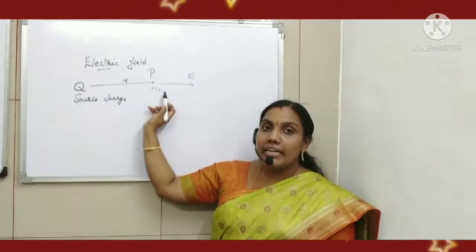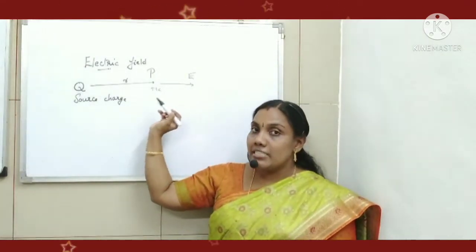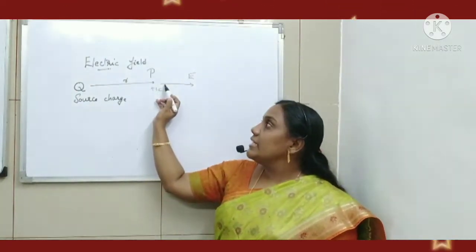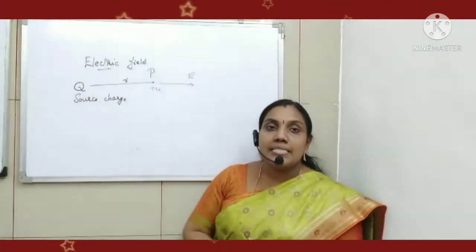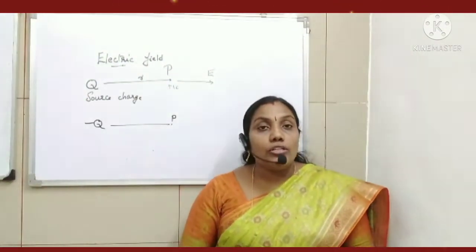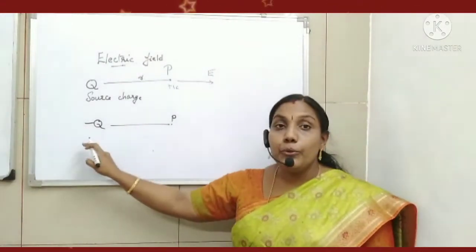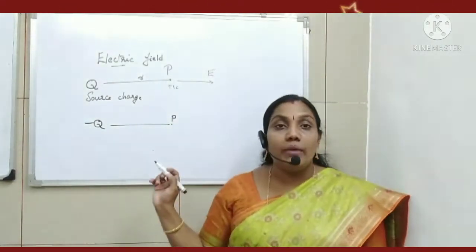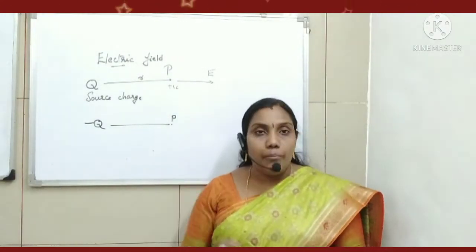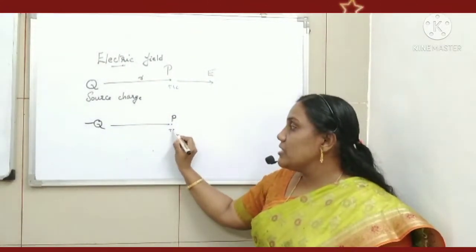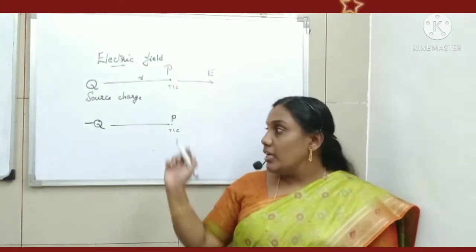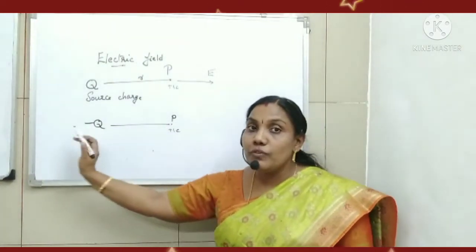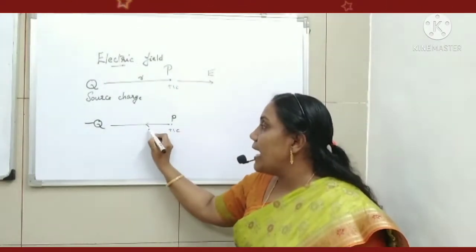So, in order to find the direction of electric field at point P, assume a unit positive test charge is placed there. The direction in which the unit positive test charge moves gives the direction of the electric field. Here, due to repulsion from the positive source charge, the unit positive test charge moves away — so that outward direction is the electric field direction. Now, to find the direction of electric field at point P due to a negative source charge: if we place a unit positive test charge at P, it gets attracted towards the negative charge — and so that inward direction represents the direction of the electric field.